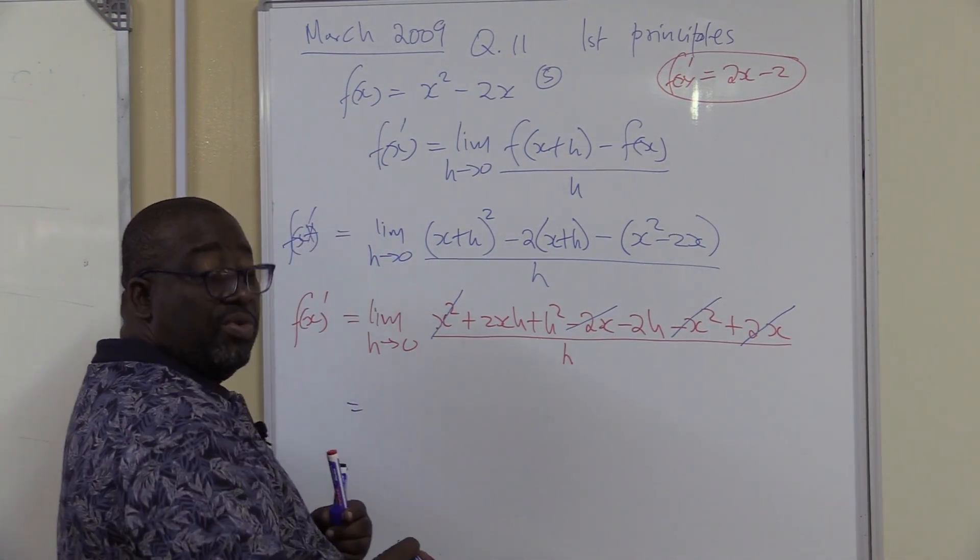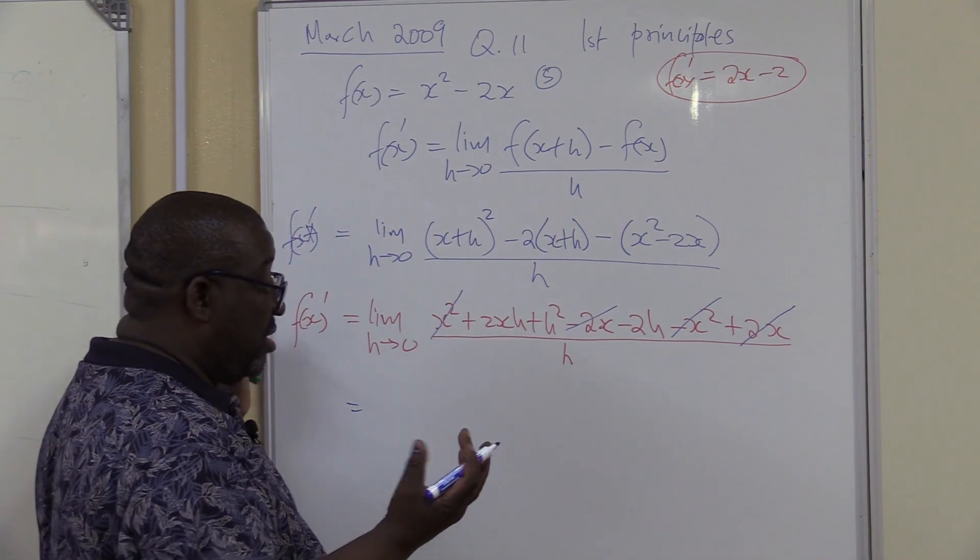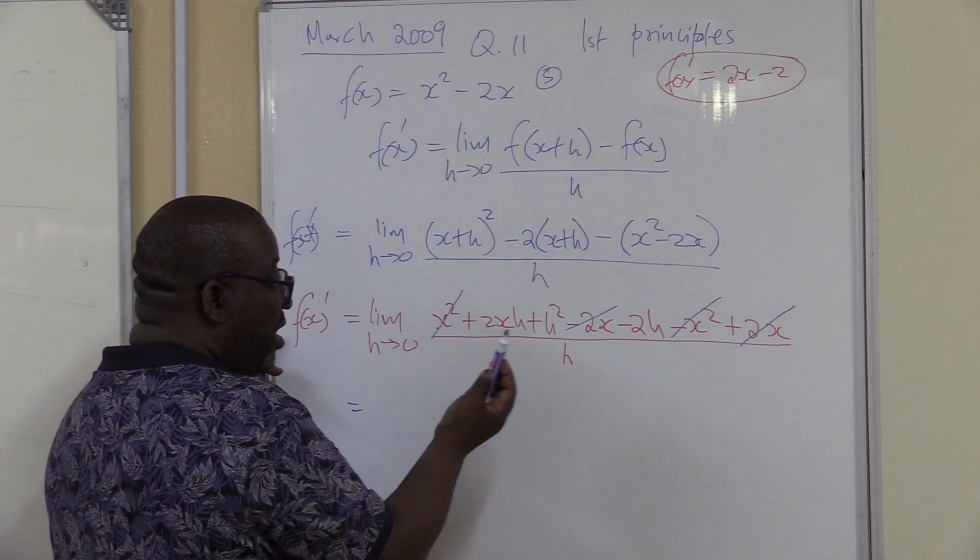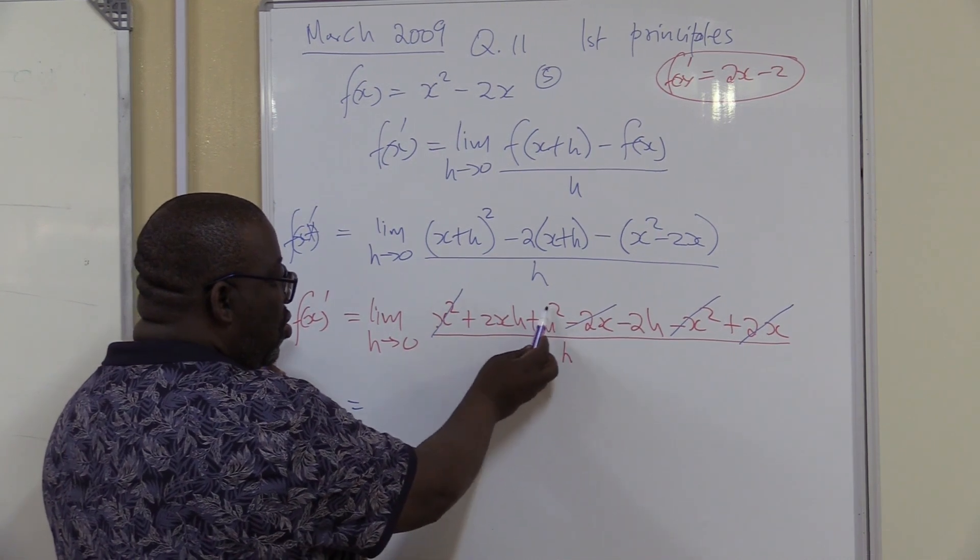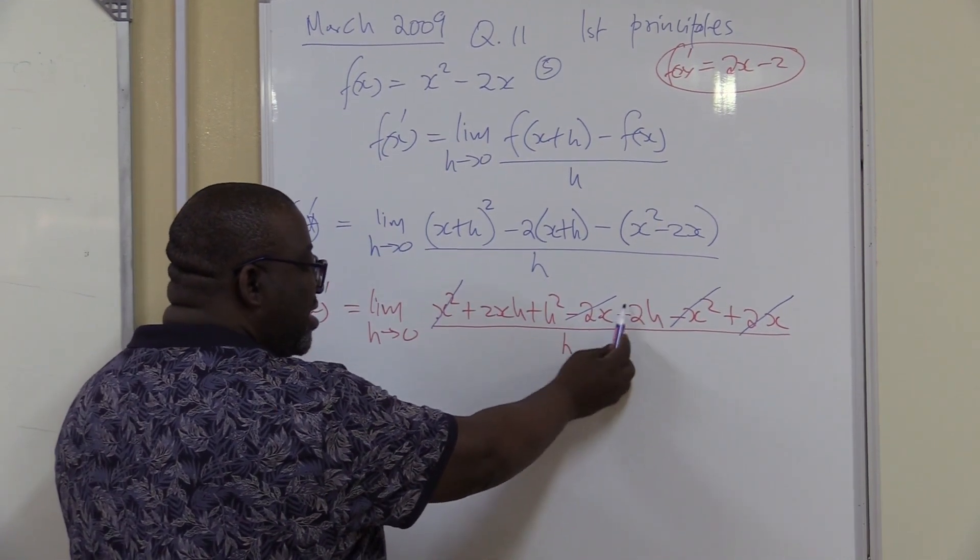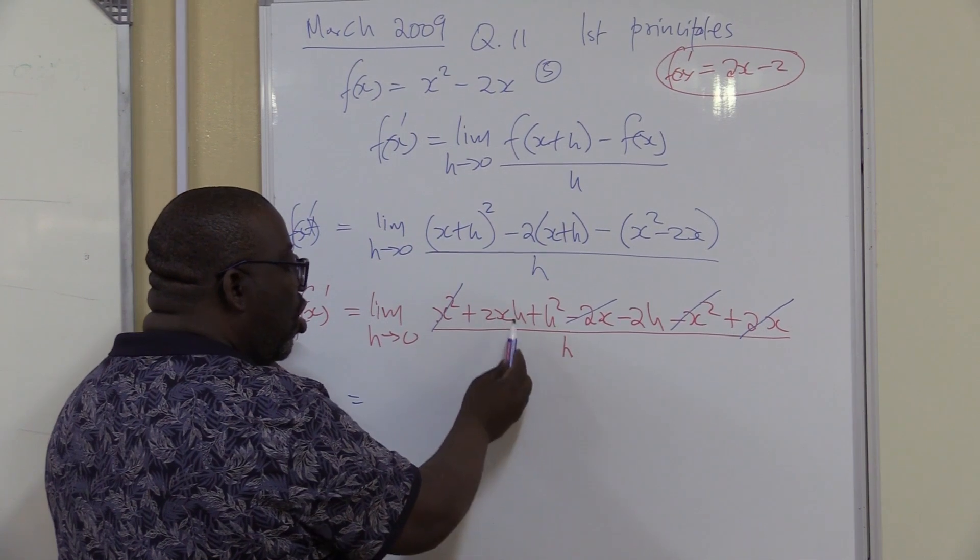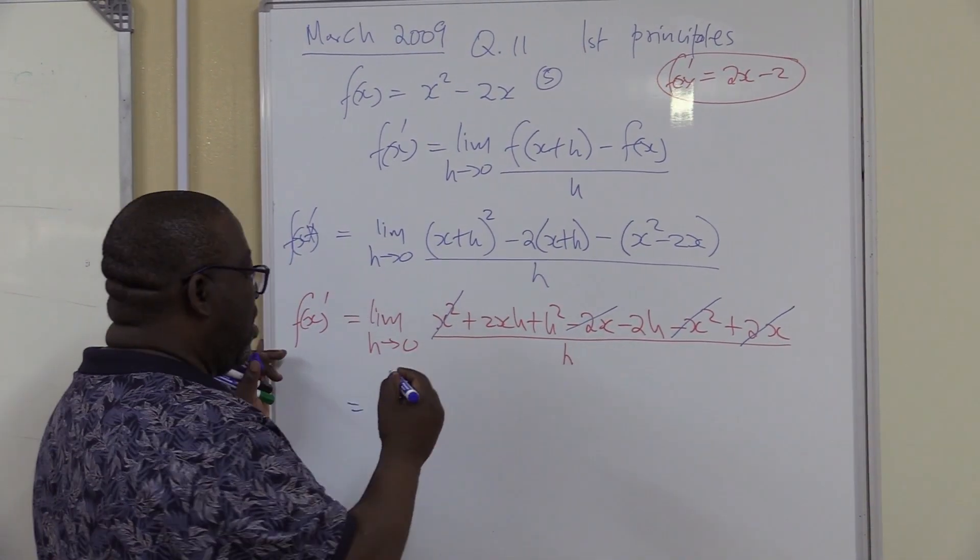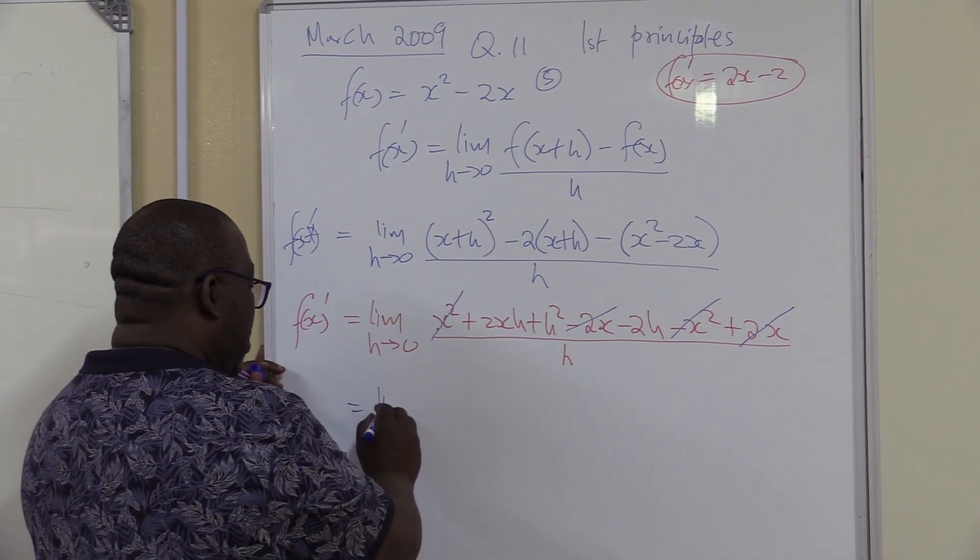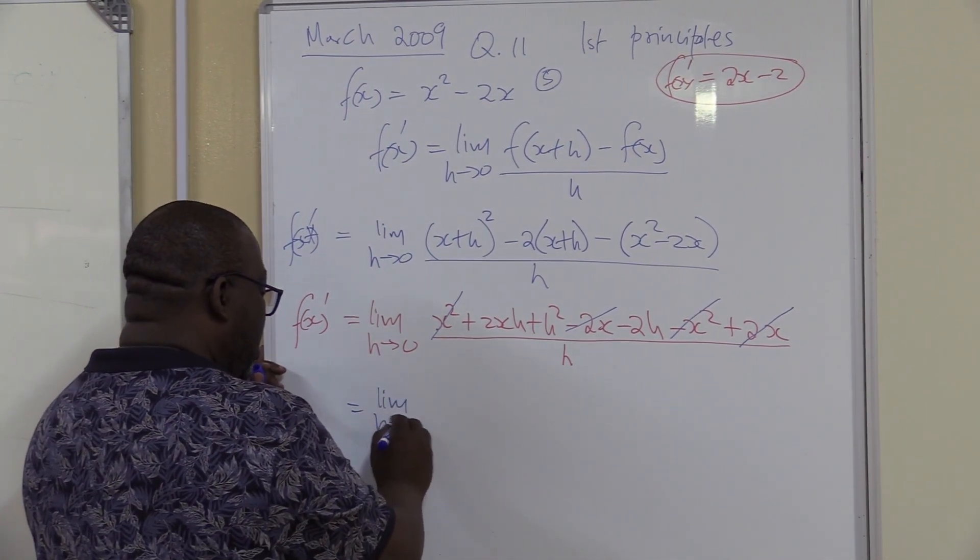I've got this fraction which gives me a problem. I've got to deal with it with this h. How many terms do I have on my numerator? It's 1, 2, 3. What do I notice with these 3 terms? All of them have got h. So I can take h so that I will cancel it out. So the limit as h approaches 0.